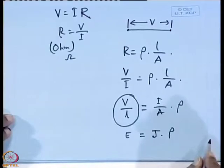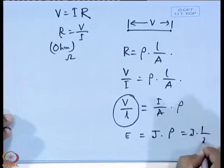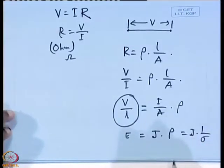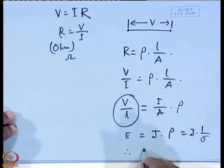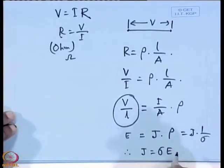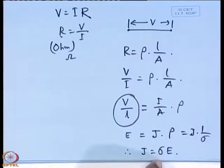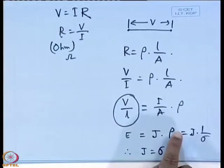Resistivity ρ equals 1/σ, where σ is the conductivity. Therefore J = σE. This J = σE is another form of Ohm's law, and it is not shape-dependent. The conductivity σ, or resistivity ρ, is the intrinsic property of the material. The unit of resistivity is Ohm·centimeter.